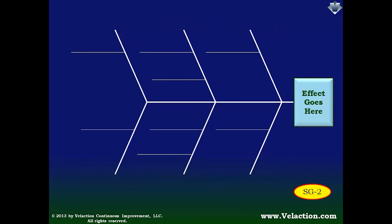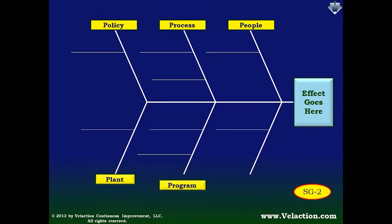Keep in mind that while the six Ms is a very common set of headers, it is by no means the only one that you can use. There is, in fact, an alternative that is commonly used in office environments. Like the six Ms, this set all starts with the same letter. The six Ps are People, Process, Policy, Plant, Program, and Product. Like the six Ms, the six Ps provides you with a good starting point for your cause and effect diagram.